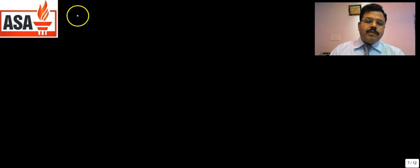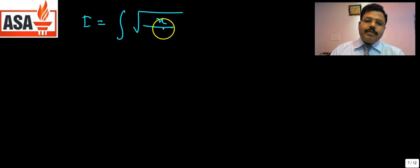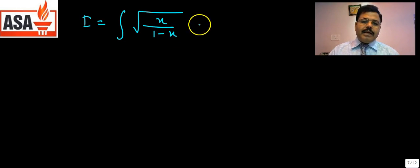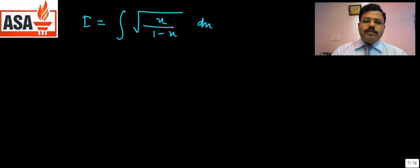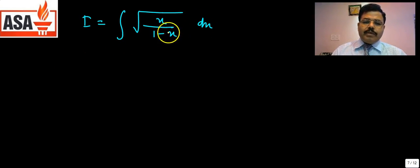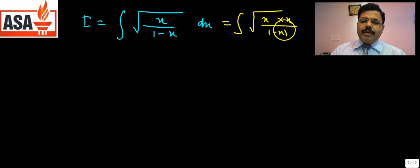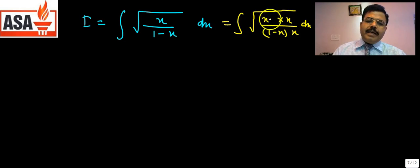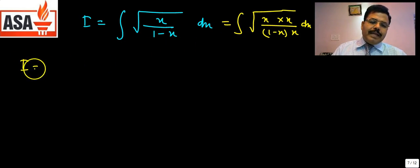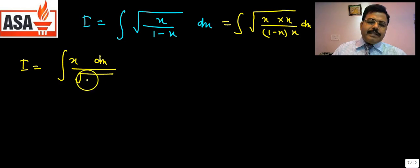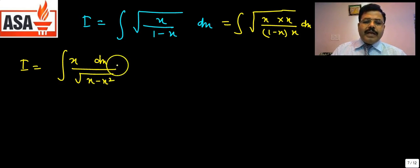The next question is ∫√x/(1+x) dx. This is a peculiar type of question. The trick is to multiply by x in both numerator and denominator inside the root, so it becomes ∫x dx / √(x − x²), after rearranging. Then write x = 1 − (1 − x) = 1 − (1 − 2x)/2 − 1/2, splitting the numerator.